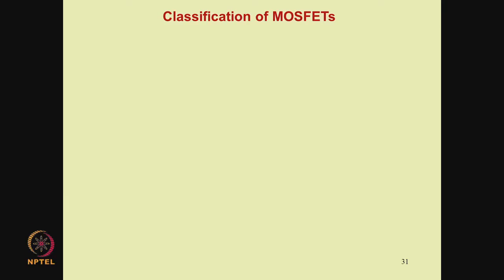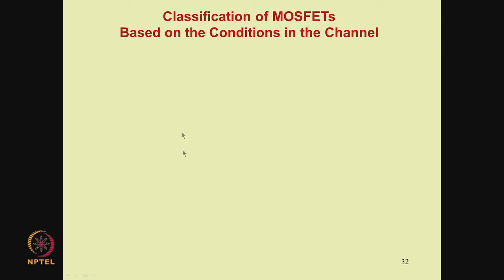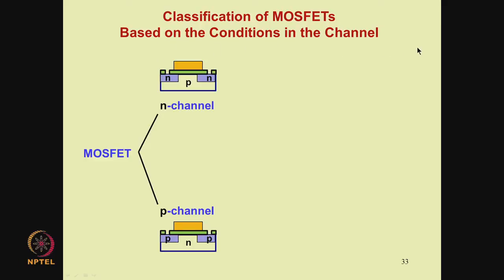Let us look at the classification of MOSFETs. First, consider classification based on the conditions in the channel. You can have an N-channel device or a P-channel device. In an N-channel device, the conducting layer at the interface — called the channel — is made of electrons. In a P-channel device, it is made of holes. A P-channel device is made using an N-type substrate and an N-channel device using a P-type substrate, because between the two N contacts there should be no current flow if there is no channel, as current flow via the substrate cannot be controlled by the gate.